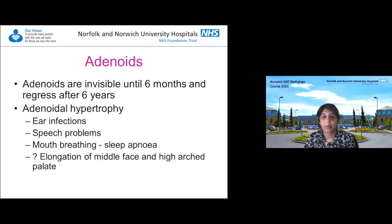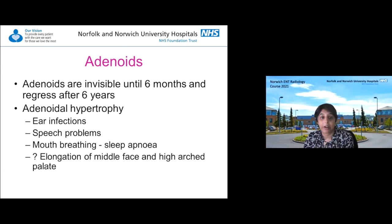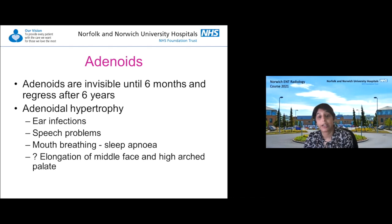Adenoids tend to be invisible until about six months of age, then regress after about six years of age. If you don't see adenoids after six months, it could imply some kind of immune disorder. Adenoidal hypertrophy can obstruct the Eustachian tube leading to recurrent ear infections, speech problems, mouth breathing, snoring, sleep apnoea, and potentially right heart failure. Some papers mention elongation of the middle face and a high arch palate.